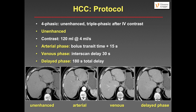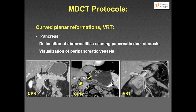I would now like to present protocols for various tumor entities. For liver cancer — the HCC protocol — we use a four-phasic protocol: an unenhanced scan, then a triple-phasic protocol with a good flow rate of 4 mL/sec. The triphasic scan includes: an arterial phase at bolus transit time plus 15 seconds (a late arterial phase, which is better for HCC visualization), a venous phase with an interscan delay of roughly 30 seconds, and a delayed phase at 180 seconds total delay. Here you see the unenhanced, arterial, venous, and delayed phases. The late phase is very important for characterization of lesions.